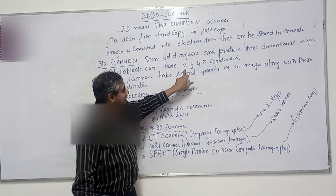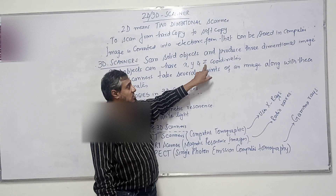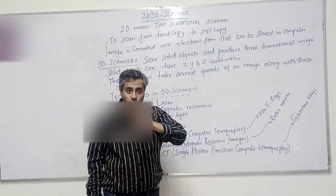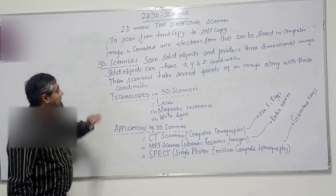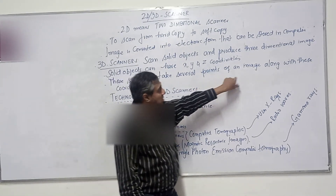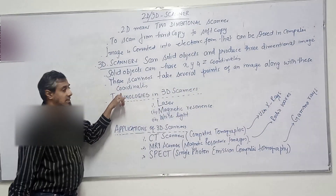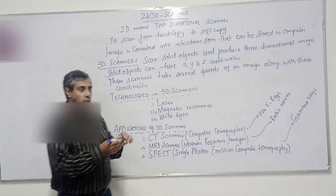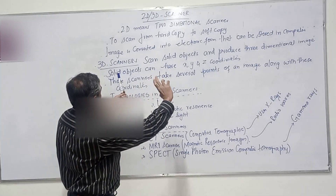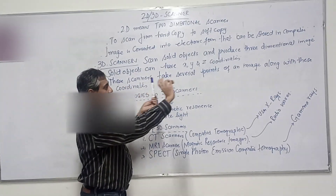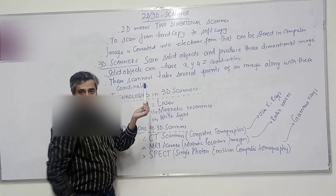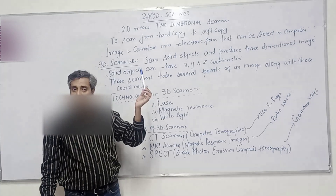Solid objects can have X-axis, Y-axis, and Z-axis coordinates. Every image will be scanned using these 3 coordinates. These scanners can take several points of an image along with these coordinates. Suppose I am capturing an object from this angle and then from another angle — there might be hundreds or millions of images taken from one rotation to another, and it will be scanned as a 3D image.